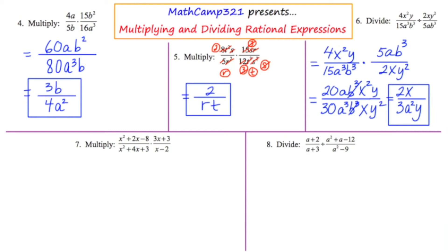Moving to example 7, this time they're asking us to multiply a trinomial over a trinomial times a binomial over a binomial. If I were to multiply across on the top and bottom, I'd end up with a really big expanded polynomial that would be very difficult to simplify. So I'm going to take a very different approach.